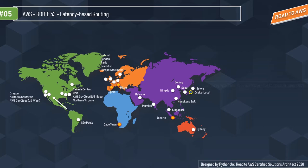If your application is hosted in multiple AWS regions, you can improve performance by serving requests from the AWS region that provides the lowest latency. To use latency-based routing, you create latency records for your resources in multiple AWS regions. When Route 53 receives a DNS request, it determines which region gives the user the lowest latency and selects the latency record for that region.